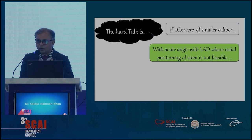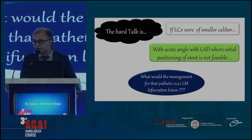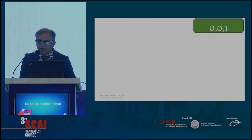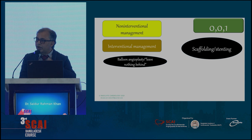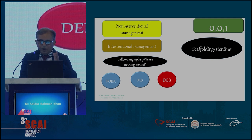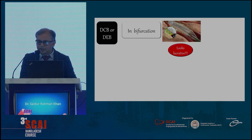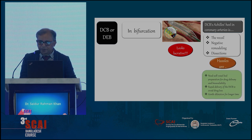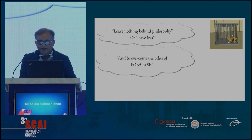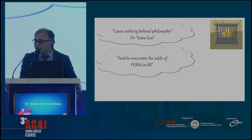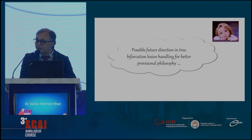The hard question is: if the LCX is smaller caliber, with an acute angle with the LAD where ostio-proximal positioning of the stent is not feasible — what do you do? Some answers exist: you can go for interventional or non-interventional medical management, but if the patient is symptomatic, you must treat it. Options include modifiable balloons, drug-eluting balloons (DCB), which are also possible here. The 'leave nothing behind' philosophy — or leave less — to overcome the risks of jailing in the side branch is possible with DCB.